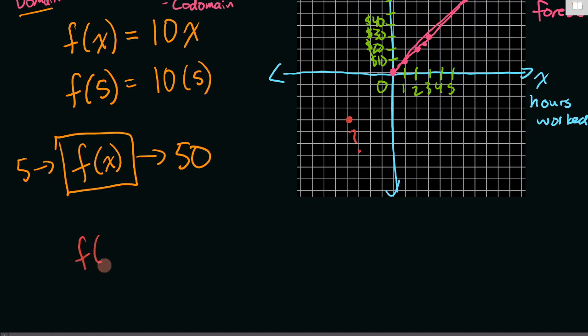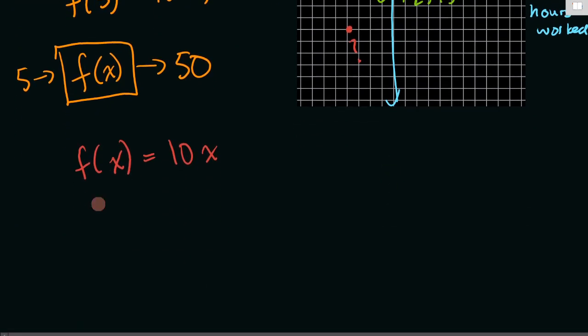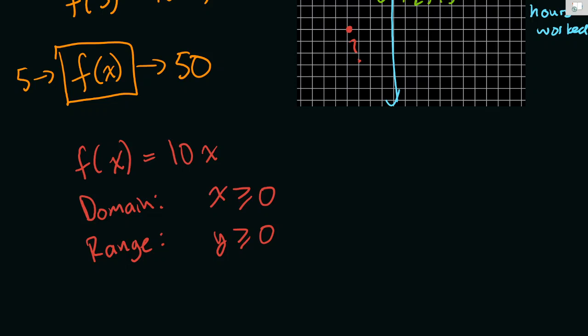So in this case we could say that our function f of x is 10x and our domain, we can simply write that x is greater than or equal to zero, and our range is y is greater than or equal to zero. This means that our x values, our hours worked, has to be greater than or equal to zero and our pay has to be greater than or equal to zero.